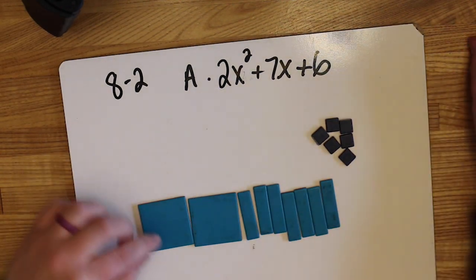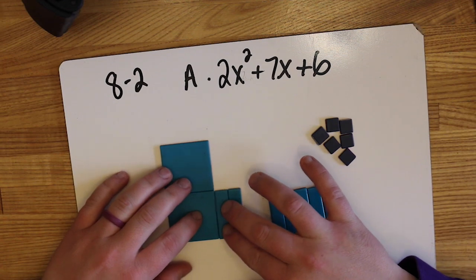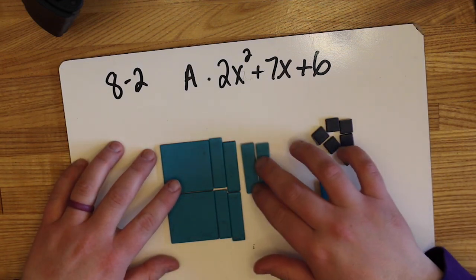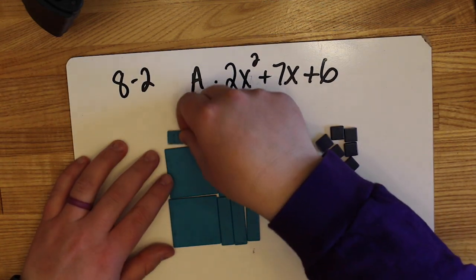For 2a, we've got 2x squared plus 7x plus 6. On your e-tiles, put those on the screen. The goal here is to arrange this into a square or a rectangle. They should fit perfectly.